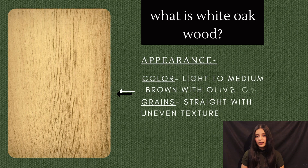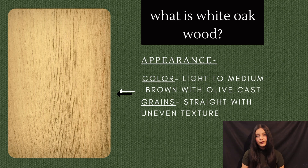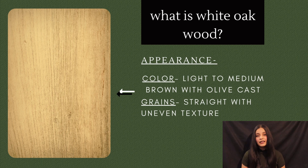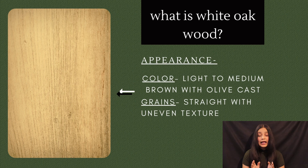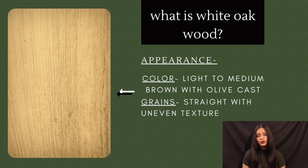If we talk about the color, it is basically light to medium brown with an olive cast. It depends on the area of the tree — the heartwood area is medium brown, while the sapwood area is light brown or a lighter shade.